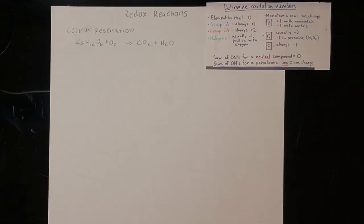In a redox reaction, a species is being oxidized and another species is being reduced. To find which is being oxidized and which is being reduced, we have to assign an oxidation number to each element by following these rules right here.